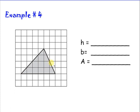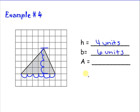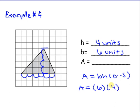Example 4 is on a coordinate plane. First I need to find the height — I go from the tallest point to the lowest point: 1, 2, 3, 4 — that's 4 units. Then the base is across the bottom: 1, 2, 3, 4, 5, 6 — that's 6 units. So the formula gives area equals 6 times 4 times 0.5. Multiplying those together gives area equals 12. Our complete answer is 12 units to the second power, because it's units times units.